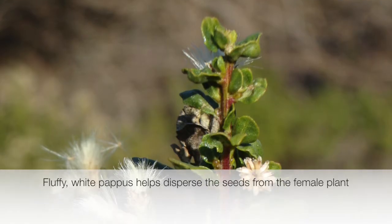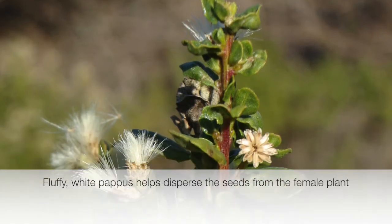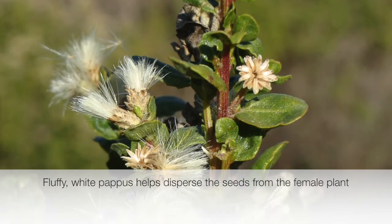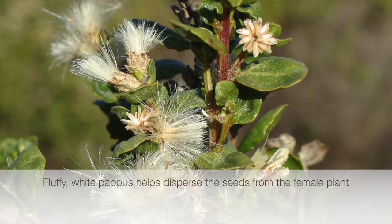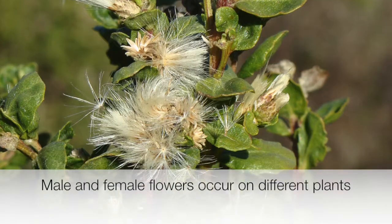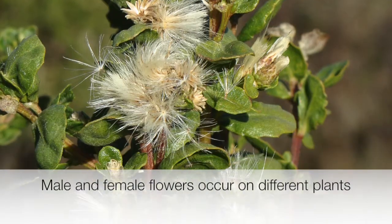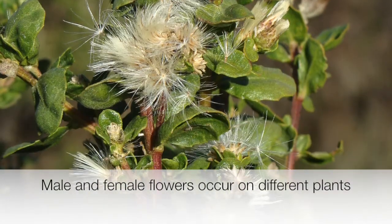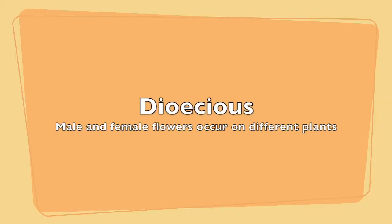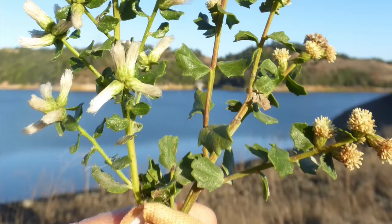The notable fluffy white pappus is adapted for wind dispersal of the seeds from the female plants. You might notice that male and female flowers are found on different plants. This condition is known as dioecious. Let's take a closer look at this concept.